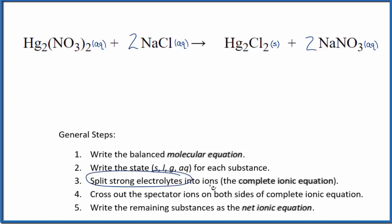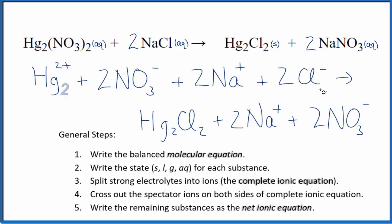So we have our states. Now we're going to split the strong electrolytes into ions, which will give us the complete ionic equation. So this is the complete ionic equation. And note that in net ionic equations, we do not split solids apart. So we kept our mercury one chloride here together.